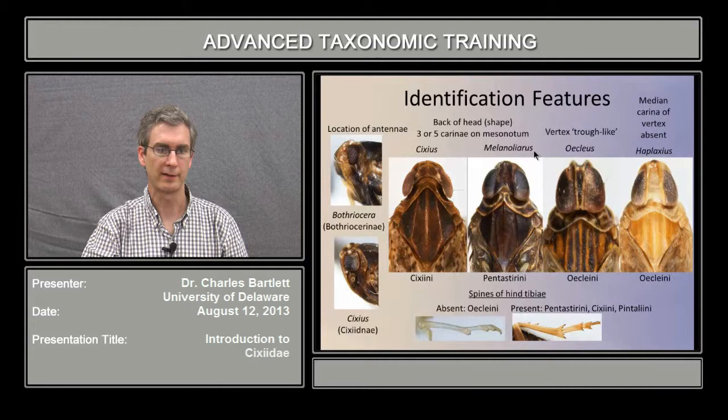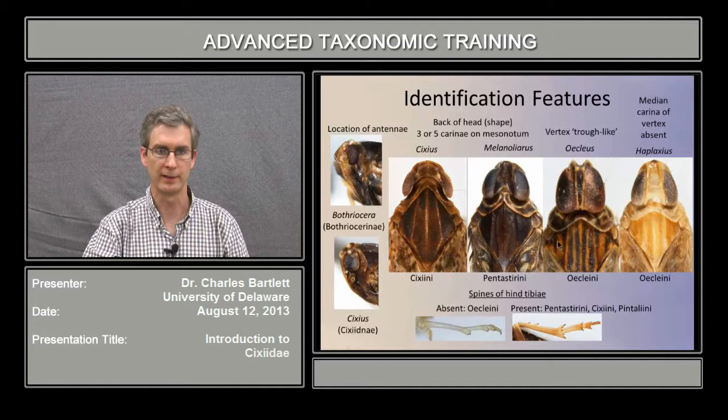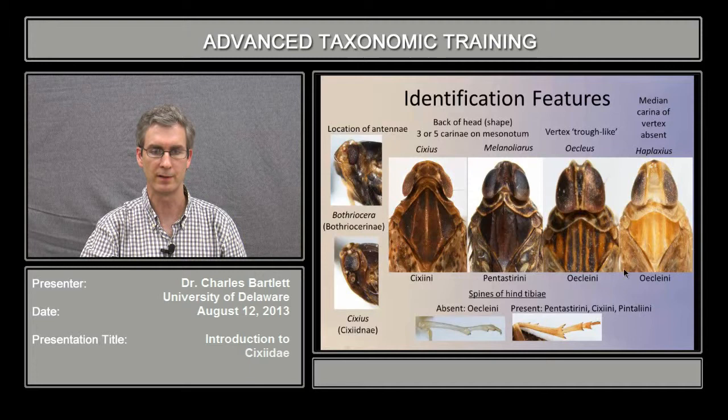The subfamilies can be recognized by the position of the antennae. In the Bothriocerenae, the antennae are in front of the eyes in cup-like structures. In the subfamily 6-seidae, the antennae are located below the eyes. Within the 6-seidae, important generic differences include the nature of the posterior margin of the head, which in 6-seidae is truncate and in Melanoliaris is notched; the number of charine on the mesonotum, which is 5 in Melanoliaris and most Eucleus, and 3 in 6-seida and Haeplaxeus; and the presence or absence of teeth on the hind tibia.